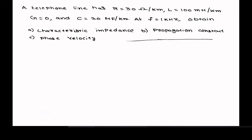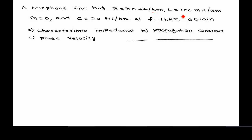A telephone line has resistance R = 30 ohms per kilometer, inductance L = 100 millihenry per kilometer, conductance G = 0, and capacitance C = 20 microfarad per kilometer. At f = 1 kilohertz, determine the characteristic impedance Z₀, the propagation constant gamma, and the phase velocity.